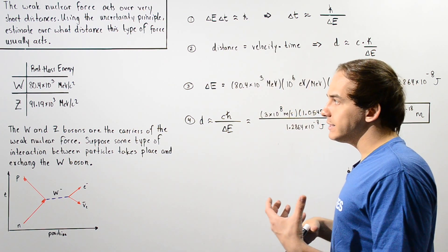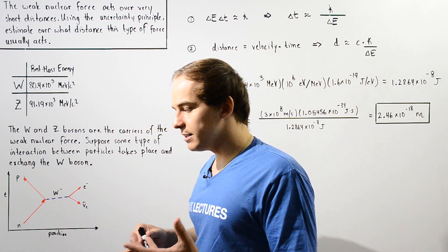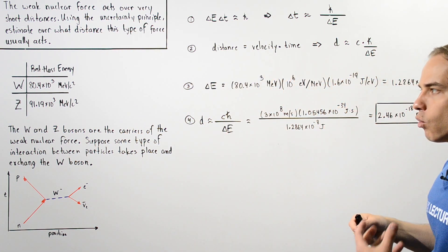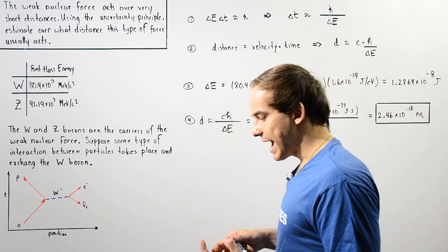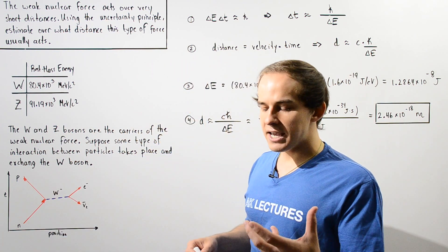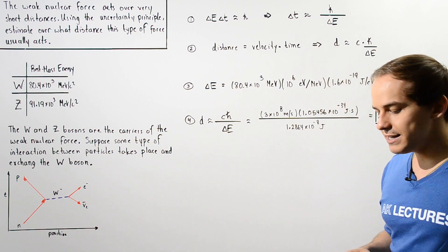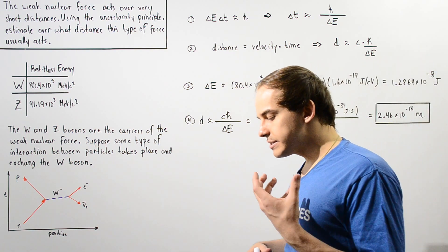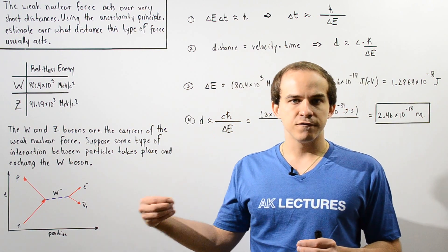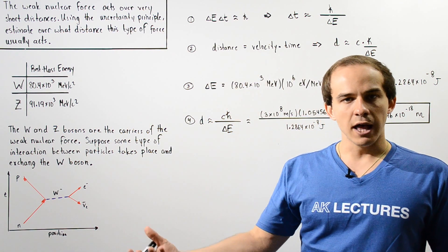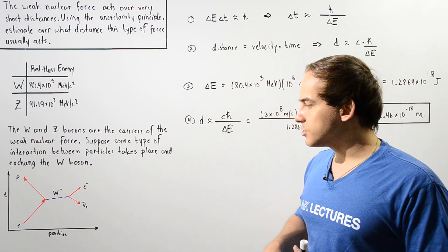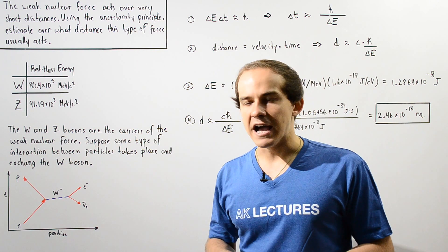How exactly can we use these values to calculate the distance over which the weak nuclear force acts? To help us visualize, let's take an example of beta negative decay. Suppose we have a neutron that undergoes beta negative decay — it transforms into a proton, an electron, and an electron anti-neutrino, as shown in the following Feynman diagram.